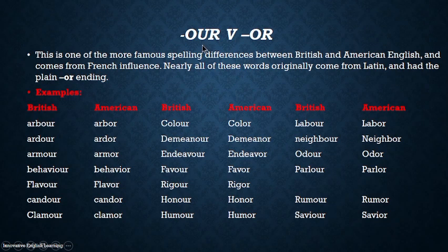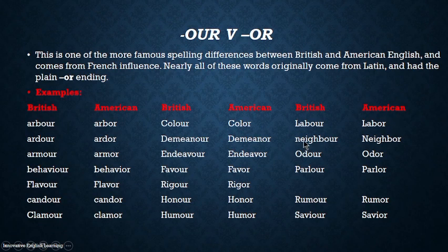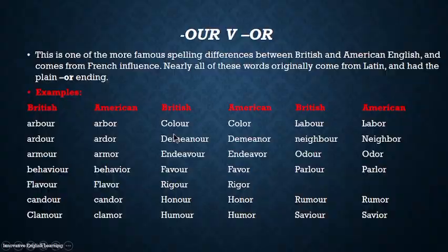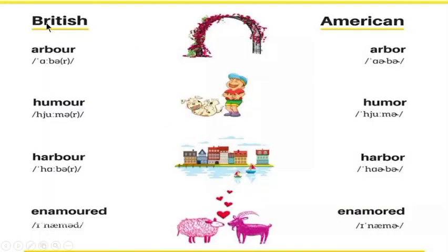Similarly, in British English we use '-our' while in American we use only '-or'. For example: labour vs. labor; colour vs. color; neighbour vs. neighbor; harbour vs. harbor; humour vs. humor; enamoured vs. enamored.